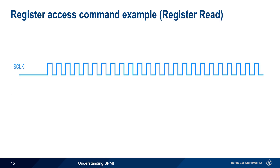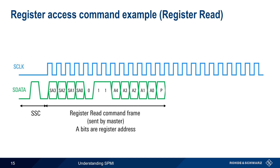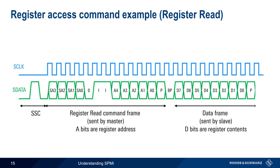Here's an example of a simple register read command. As with other commands, we begin with the sequence start condition, followed by the register read command. This part of the command is sent by the master and contains both the slave address and the address of the register whose contents we want to read. A bus park is then used to hand the bus over to the target slave, who responds with the contents of the requested register, after which another bus park is performed to return the bus to the idle state. In both cases, the data is protected by a parity bit.